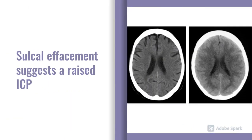Sulcal effacement is another important sign to look for. The image on the left is a normal looking CT scan — you can see the sulci quite crisp, those black finger-like projections from the outer aspect of the brain. Whereas in the image on the right, those sulci, those black spaces, are lost. That's a good example of sulcal effacement. Sulcal effacement is largely suggestive of raised intracranial pressure — again, a poor prognostic sign.